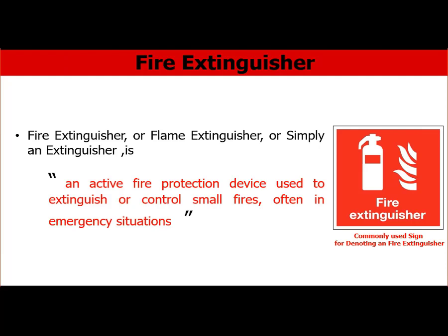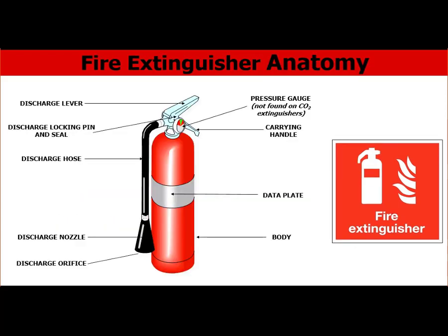So what is a fire extinguisher, or flame extinguisher? Simply, a fire extinguisher is an active fire protection device used to extinguish or control small fires, often in emergency situations. It's clear that it's not intended for any rapidly spreading fire or larger fires. The position of a fire extinguisher in any building or yard is usually noted by the sign shown on the right side of your screen.